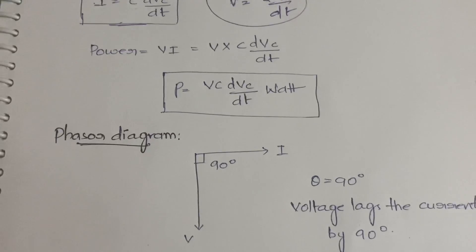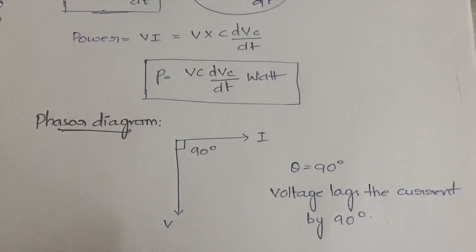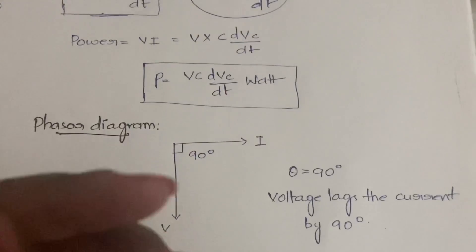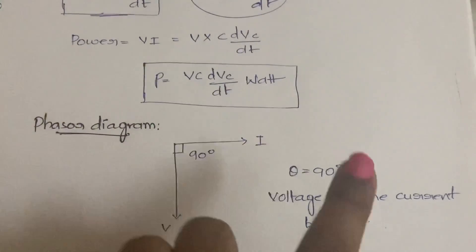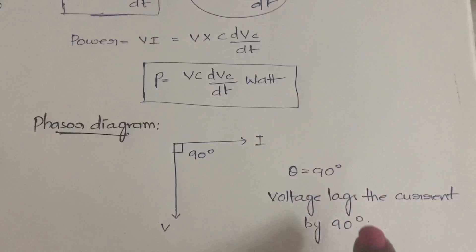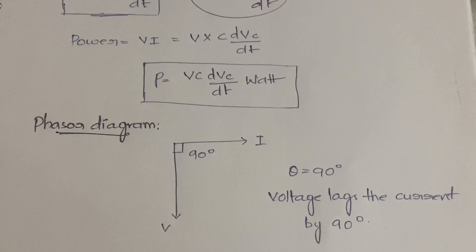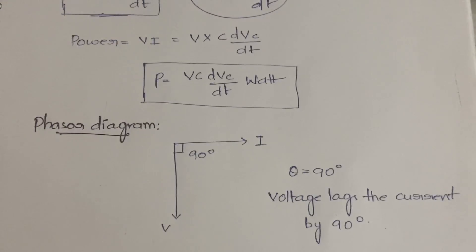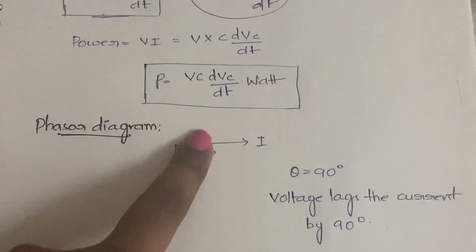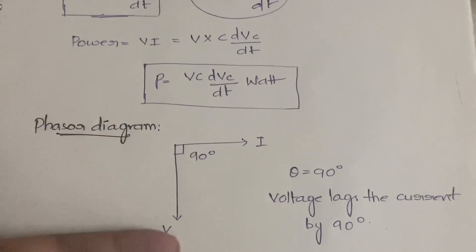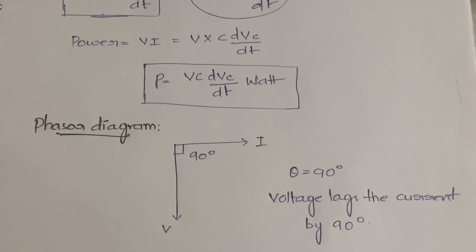In the phasor diagram for capacitance, theta is also 90 degrees, but voltage is below the current axis. This means voltage is lagging the current by 90 degrees — the opposite of inductance where voltage was leading. A helpful memory trick: in inductance the formula starts with V, and voltage leads; in capacitance the formula starts with I, and voltage lags.